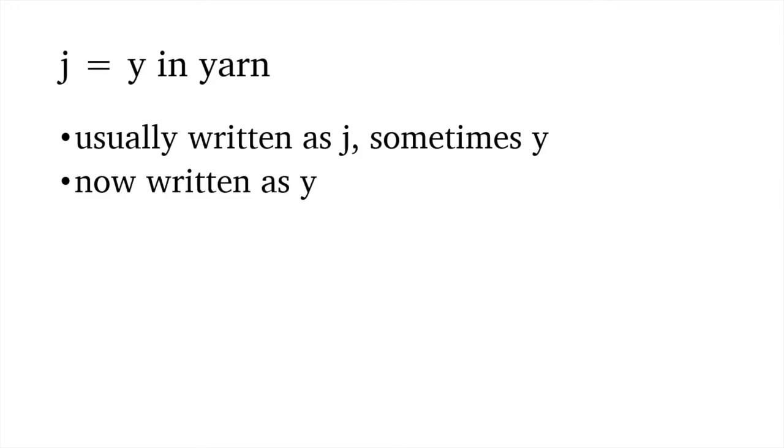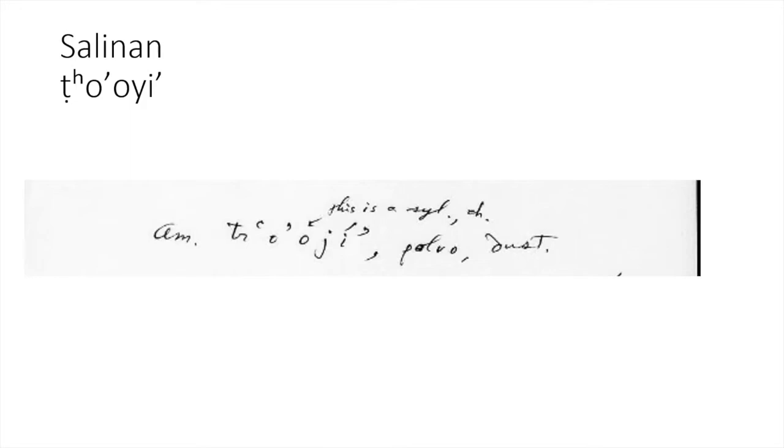And, Y. The Y sound. Y in yarn. He usually writes it with a J. That's how it's written in IPA. Sometimes, he writes it in the Y. Usually, it's J. And, of course, today, to match the Roman alphabet, people usually write it with a Y, not a J sound, as he did.